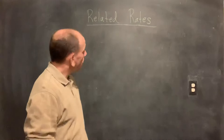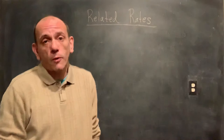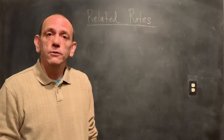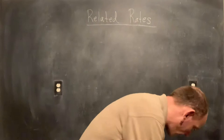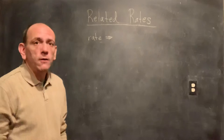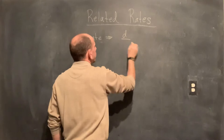Today we want to take a look at related rate problems. Similar to optimization and other story problems, they're all different contexts, so there isn't really one way to solve all of them, but they all have a general sort of structure that we can use to approach solving these types of problems. Related rates — remember a rate means that we've got a change with respect to time.